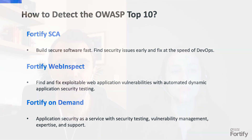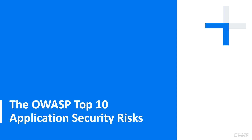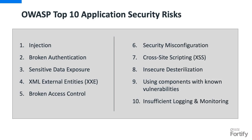Now let's actually talk about the OWASP Top 10 risks. They are: injection, broken authentication, sensitive data exposure, XML external entities (also called XXE), broken access control, security misconfiguration, cross-site scripting (also called XSS), insecure deserialization, using components with known vulnerabilities, and insufficient logging and monitoring.